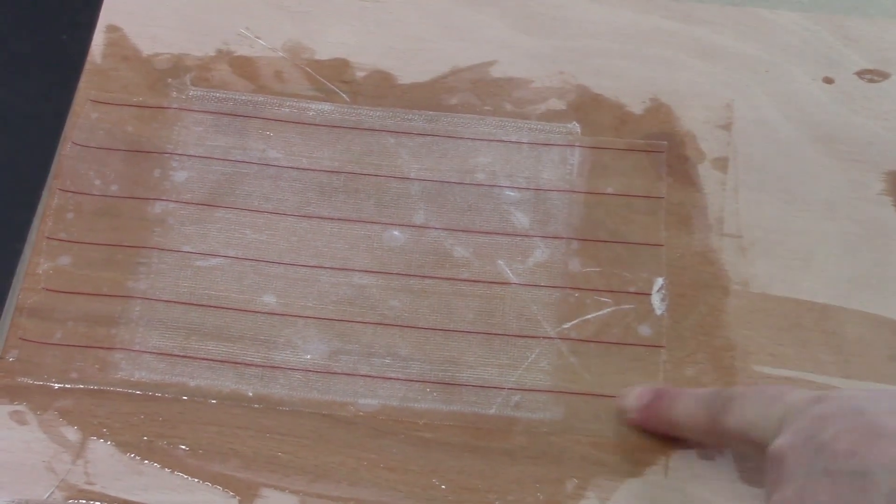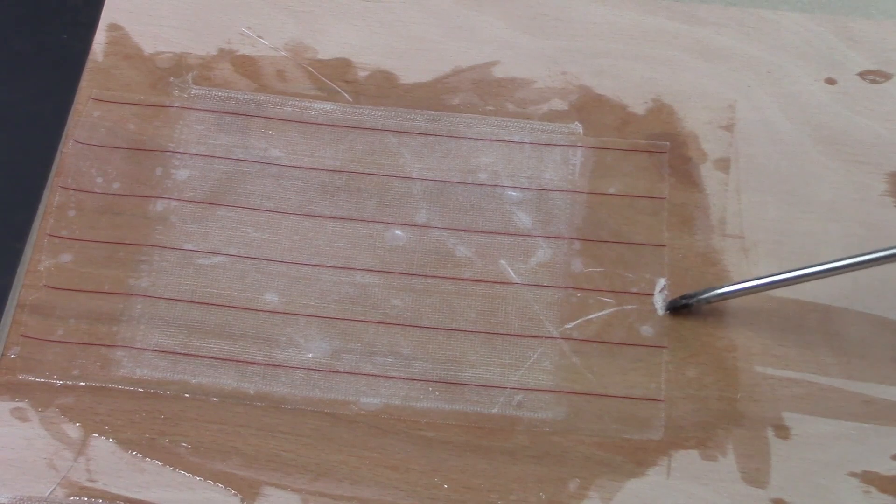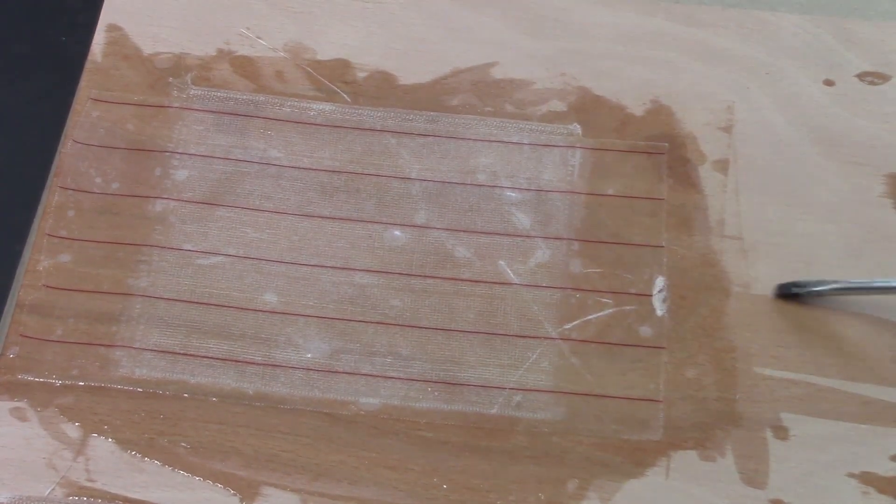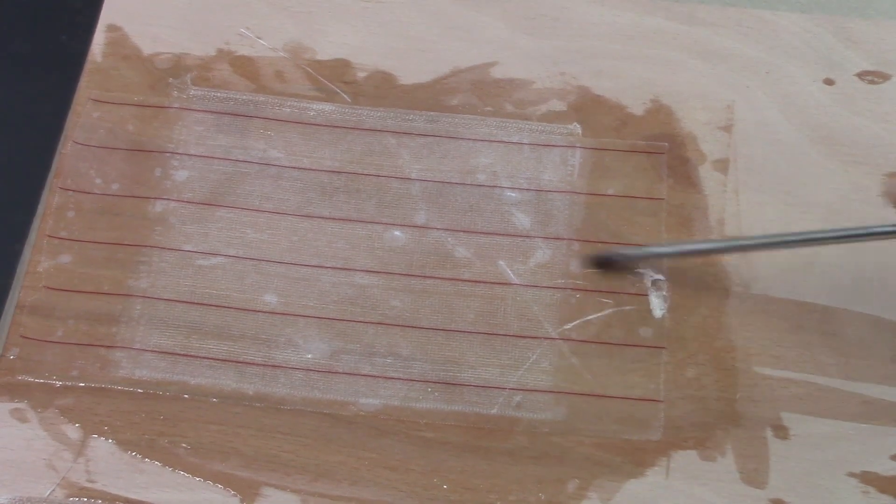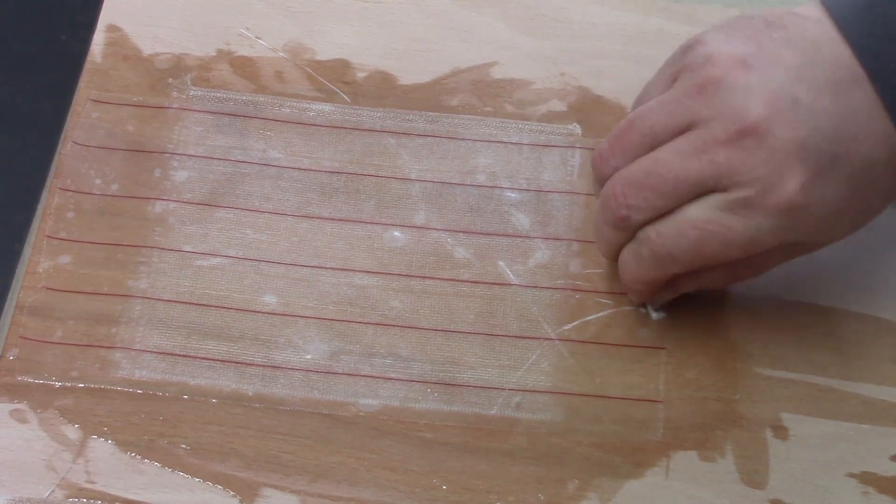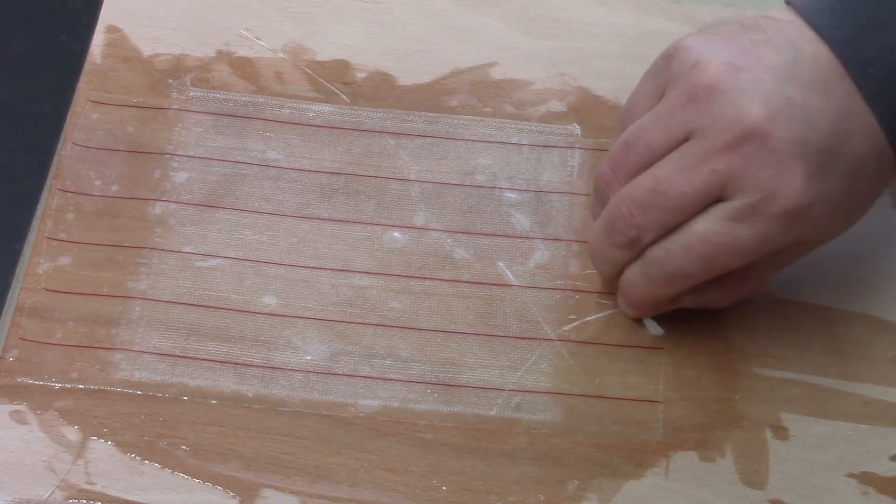Here we demonstrate why it's important not to over-saturate the peel ply with epoxy and why it's a good idea to leave a dry edge to grab hold of. As you can see, even with a sharp tool, it's difficult to lift the peel ply when it's bonded down to the edge. Thanks for watching.